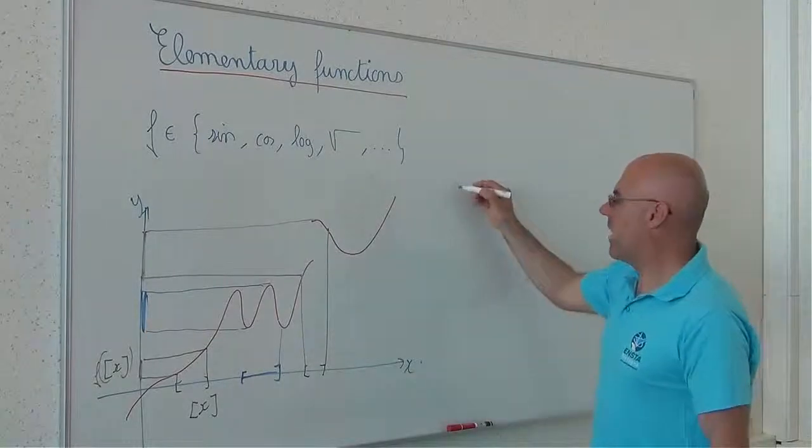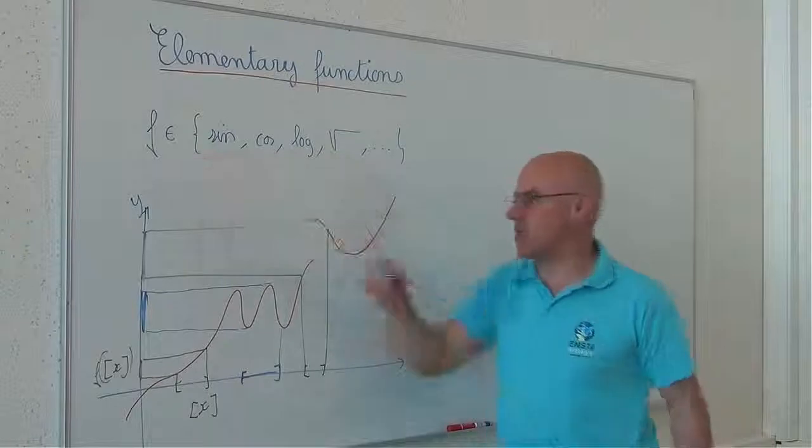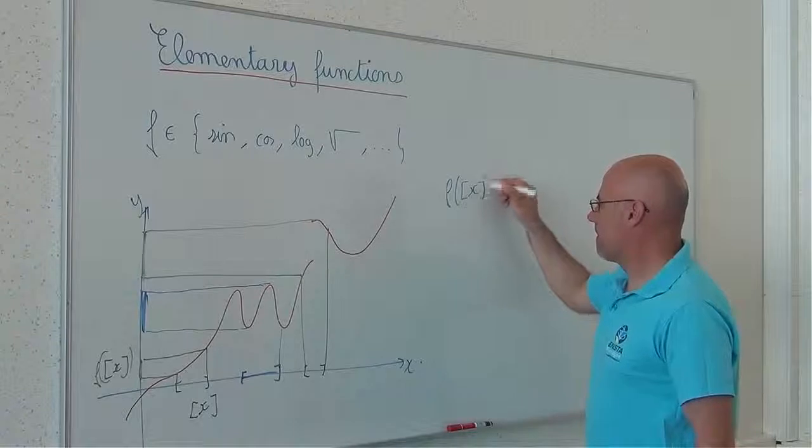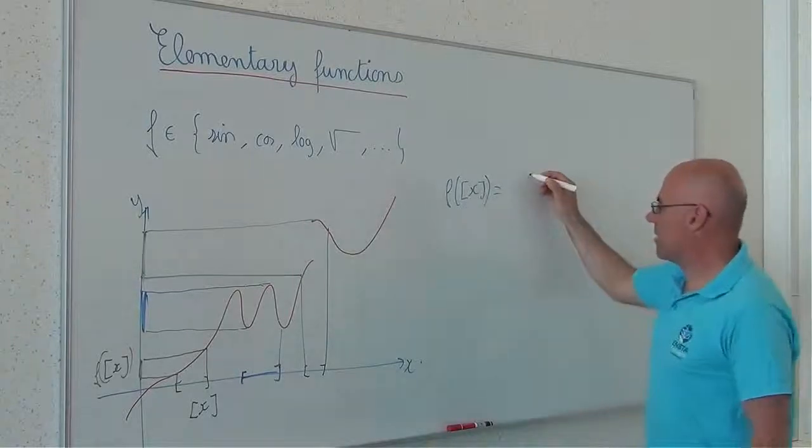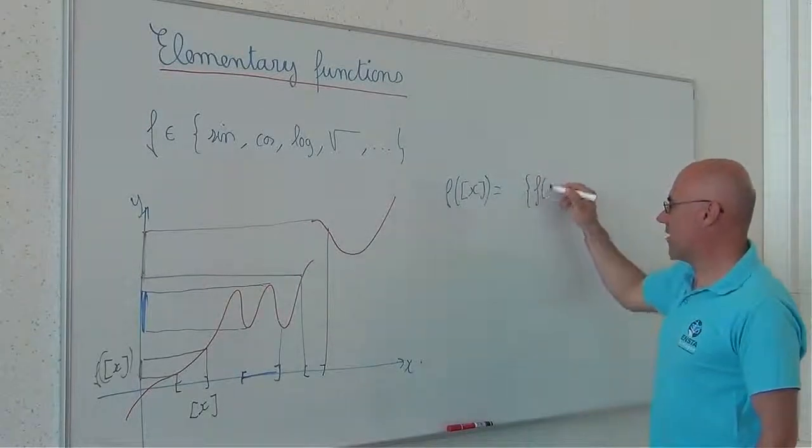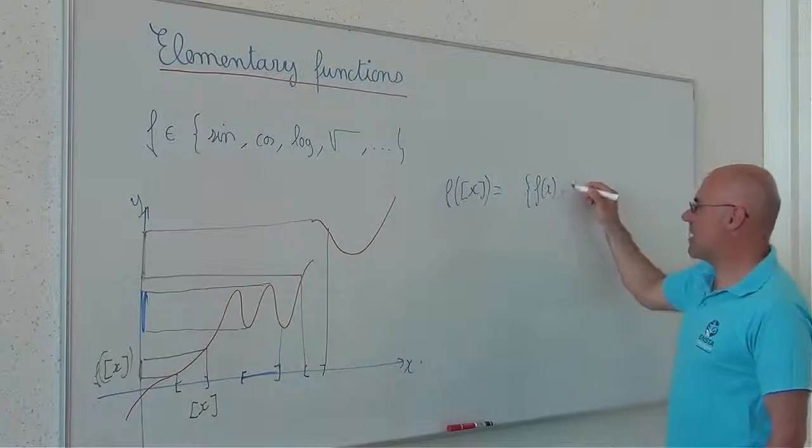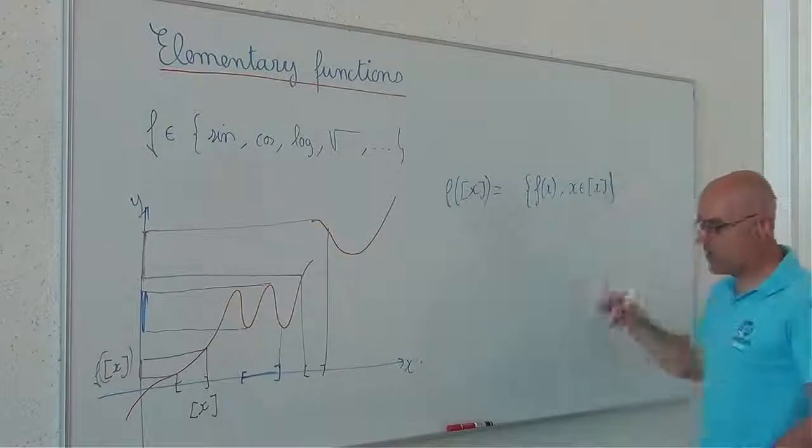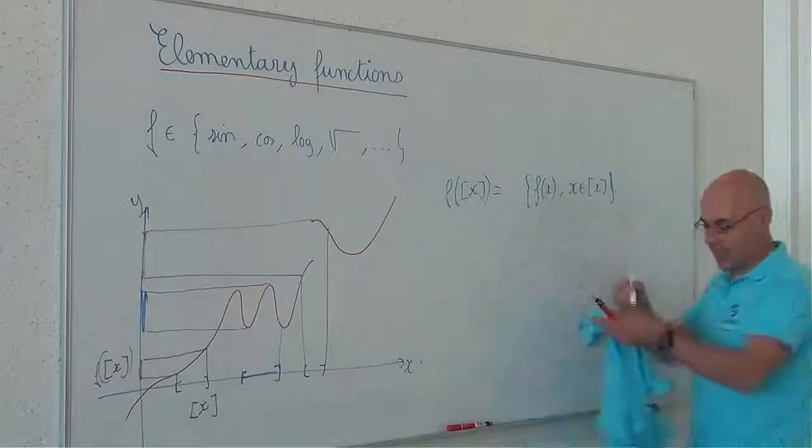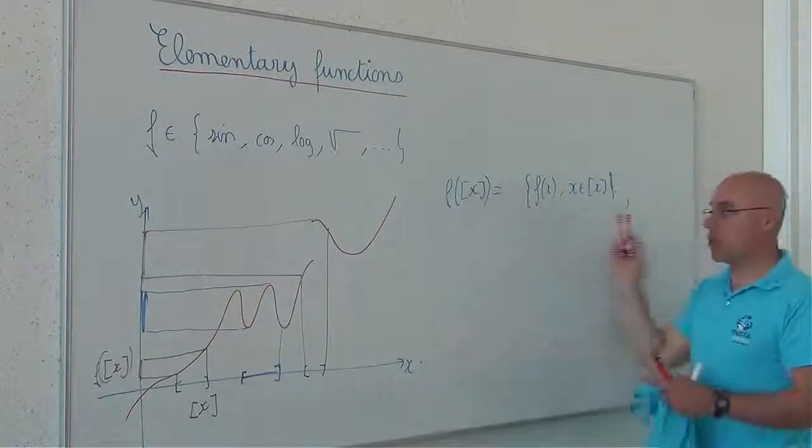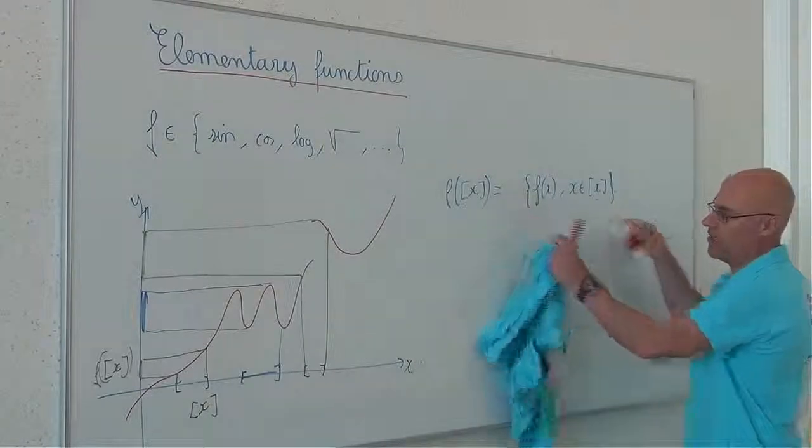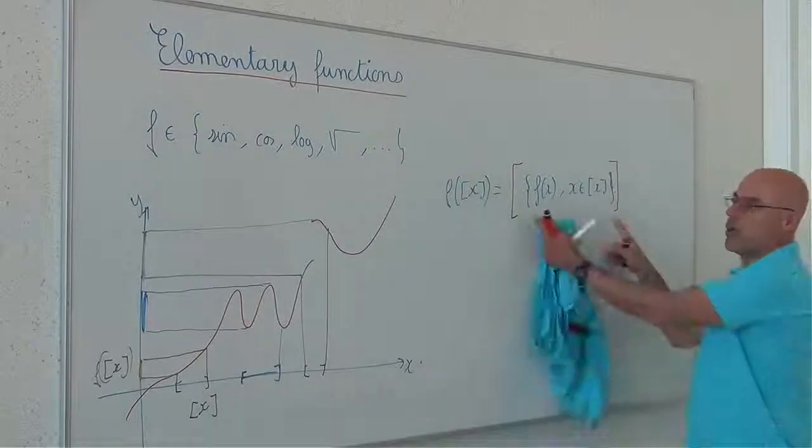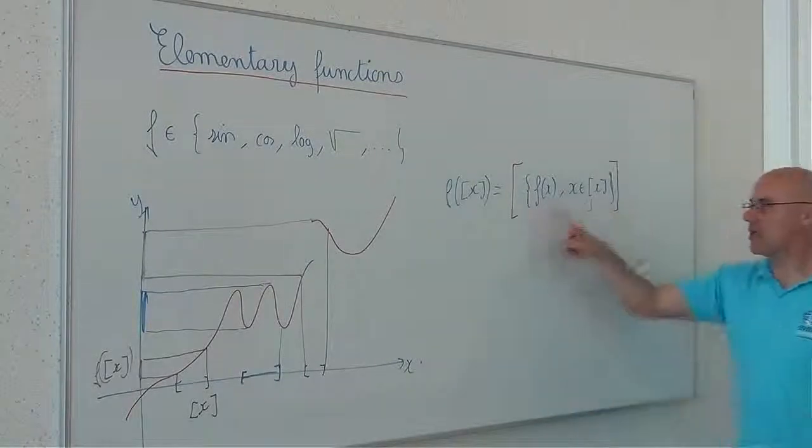More formally, how can I define this expansion to intervals? f of x. I take all f of x, assuming that x belongs to this interval. And because this set may not be continuous, may not be an interval, I take the smallest interval which encloses this set.